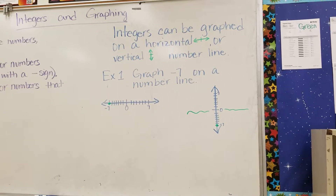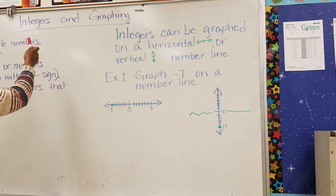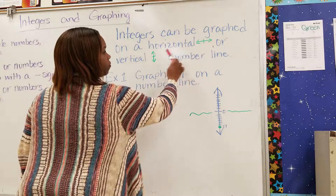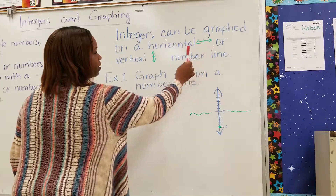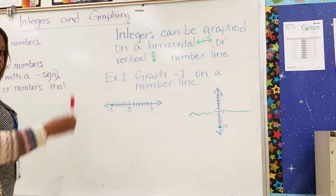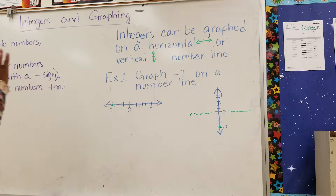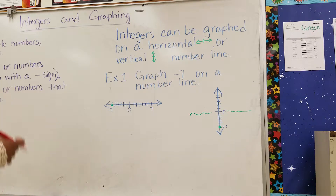Now we have talked about integers. Now we're going to talk about graphing. Integers can be graphed on a horizontal — that means side to side, going from left to right — or a vertical — straight up and down — number line. Example number one: graph negative seven on a number line. If you need to pause the video, please do so to take all this down.